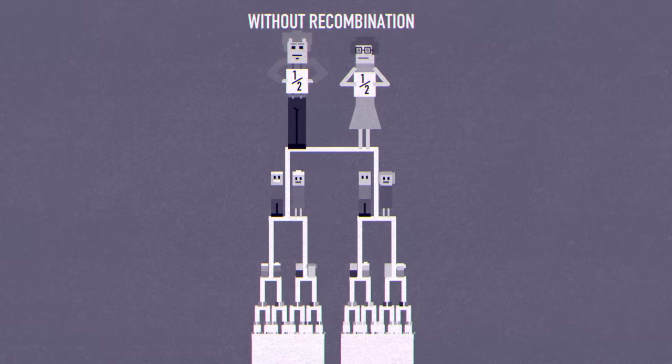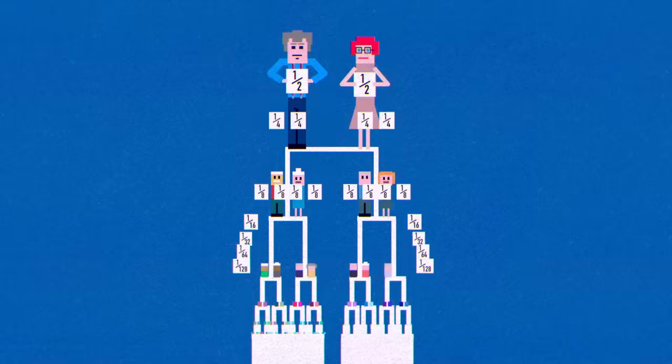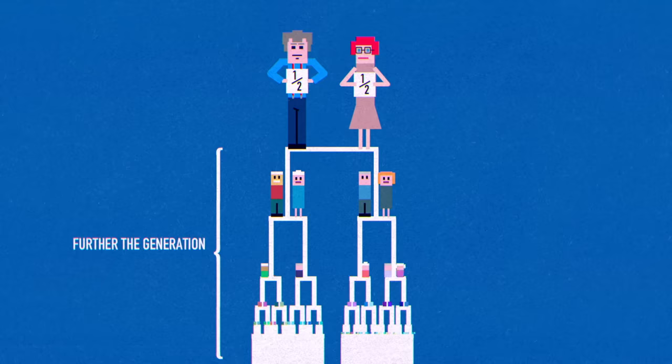Without recombination, you would get a quarter from each grandparent, an eighth from each great-grandparent, and so on. But because recombination happens every generation, those numbers vary. The more generations removed an ancestor is, the more likely they won't be represented in your DNA at all.